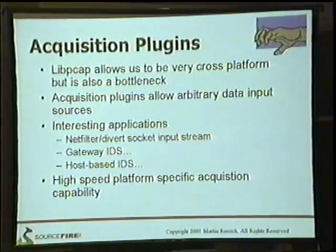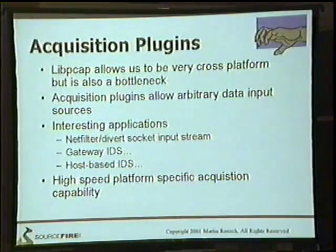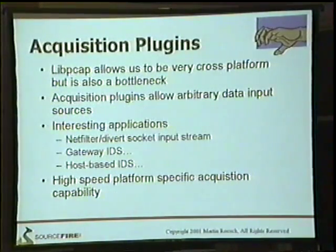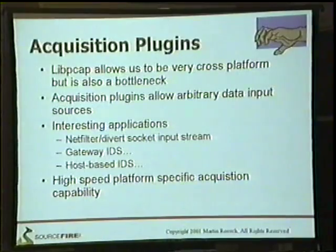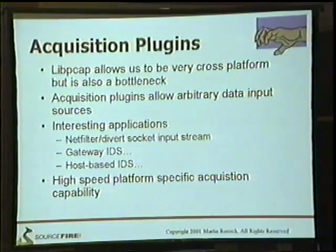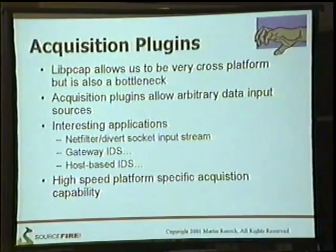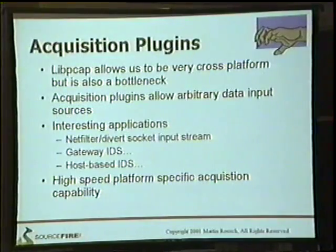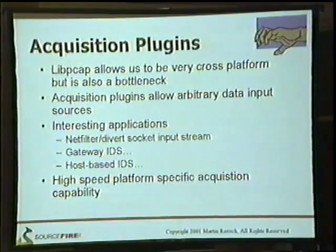We're also adding acquisition plug-ins. LibPCAP is a big performance bottleneck — it lets us be cross-platform, but makes it tough to get over about 150 megabits per second. Acquisition plug-ins allow arbitrary data input sources, including high-speed packet acquisition interfaces that talk directly to the NIC driver on a specific operating system. In the general case, Snort will still support LibPCAP, but for specific hardware you'll be able to write a plug-in to talk to that platform's packet acquisition interface much faster. This also allows Snort to talk to Netfilter, Divert Sockets, and the new PF interface in OpenBSD.